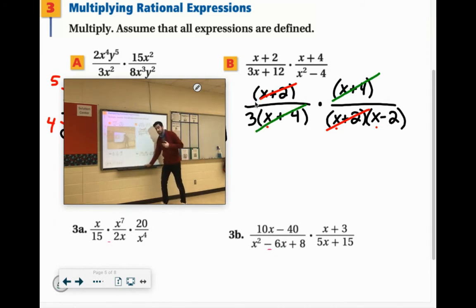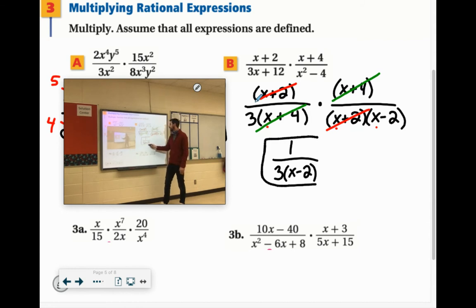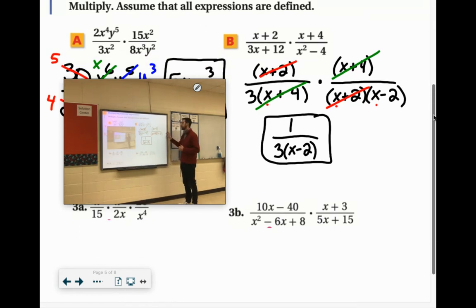So we have nothing left in the numerator. So we're going to write a 1 as a place filler up there. Denominator, I'm going to have the 3 and the x minus 2. Now, I'd prefer you leave it like that. Leave it in that factored form. You don't need to distribute that. Some people prefer that you multiply everything together at the end. I would say, ask the teacher you're working with. But I think it looks better like that. It looks a little cleaner. Easier to see if you have any common factors.